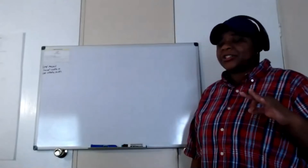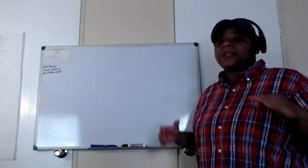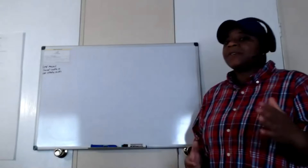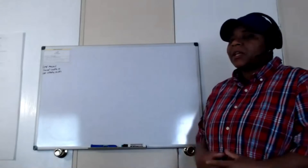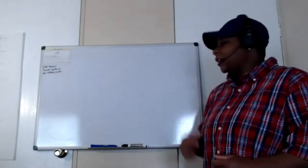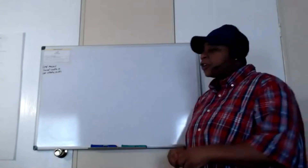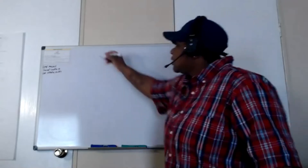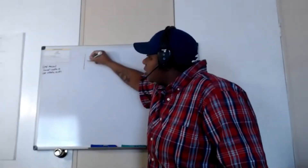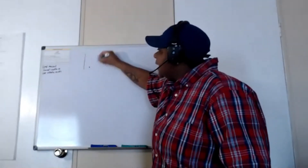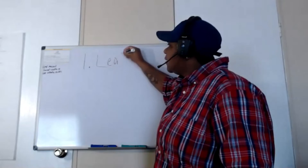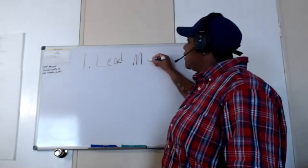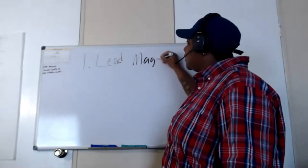Basically, there are three things that you're going to need to be able to build your email list from scratch using free traffic. The first thing that you're going to need is what we call a lead magnet.